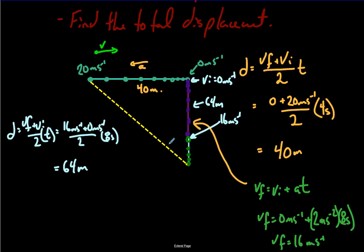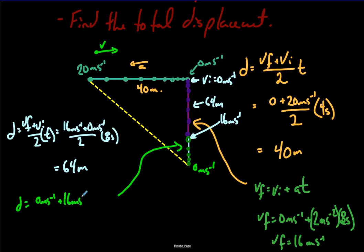The last section is the object slowing down from 16 meters per second to zero over three seconds. Using the same formula: (0 + 16)/2 × 3 = 8 × 3 = 24 more meters southward.